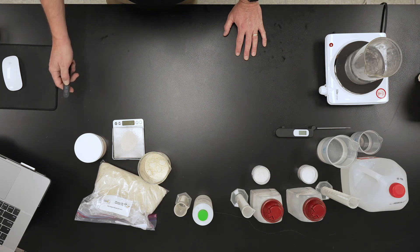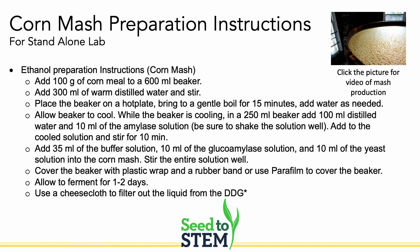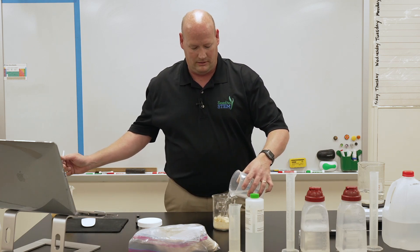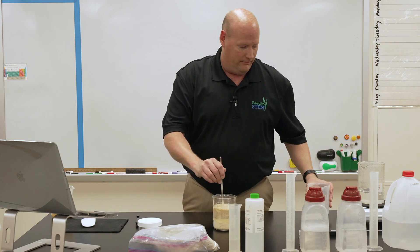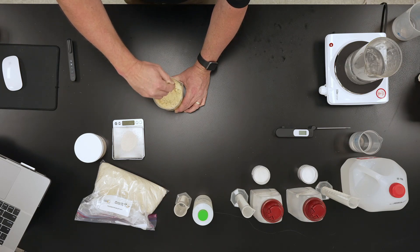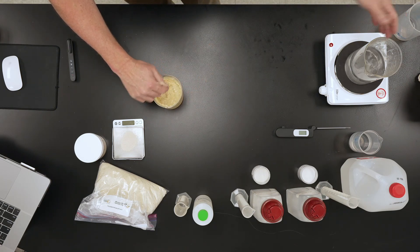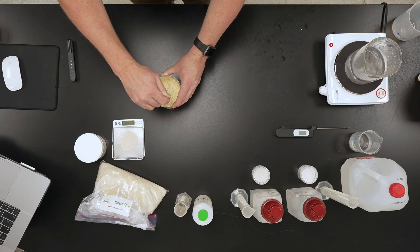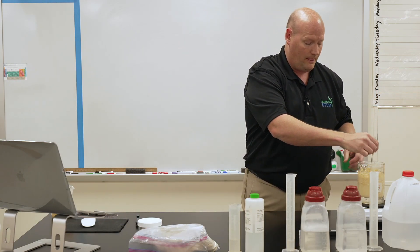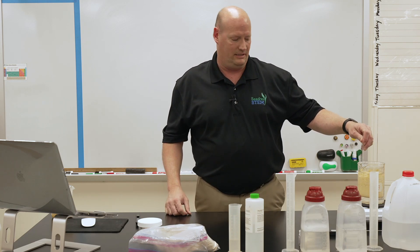The first step is to get our mash ready. We have 100 grams of ground corn in our bucket or beaker, and we're going to add 300 milliliters of distilled water. Give that a little stir. Then we need to heat this up. We have a water bath — a 1000 milliliter beaker with boiling water — and we're going to set our beaker right inside to give it a little bath. This is going to cook for about 15 minutes, or until we get a thick oatmeal consistency.